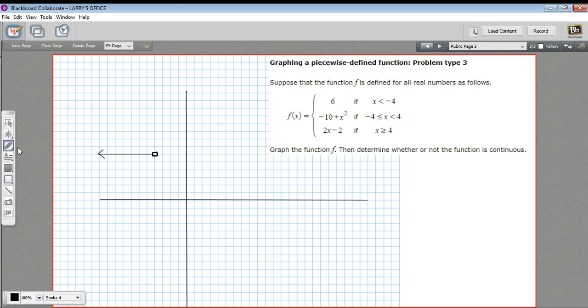So I'm just going to make a note for myself. I'm going to make a little hash mark at negative 4 and at 4 because that's how far this function is going to stretch. And then we have a quadratic to plot in here, a parabola.